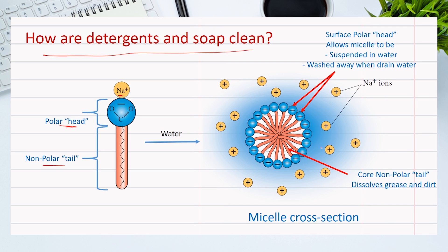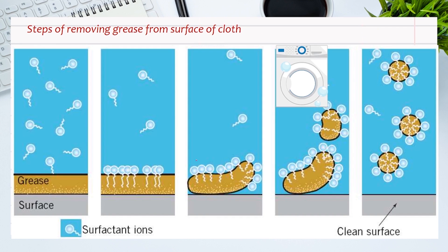These micelles act as emulsifiers. For non-polar dirt, grease, or fat stains, the soap tails bind to the grease and, with the help of the polar head, pull them away from the surface of the cloth, breaking them into smaller particles with the help of the motion of the washing machine. Eventually, new micelles are formed with the dirt or grease inside. These micelles, bonded to the cleaning water from the polar surface side, are washed away when draining the water from the washing machine.